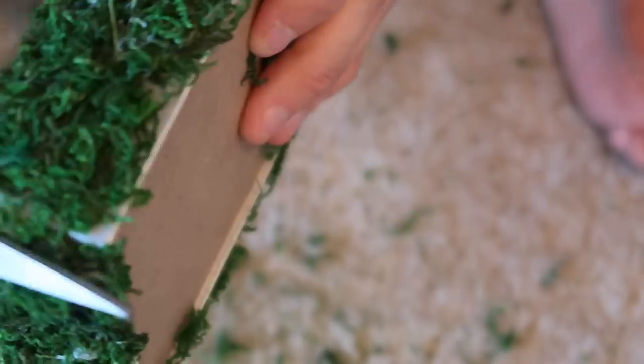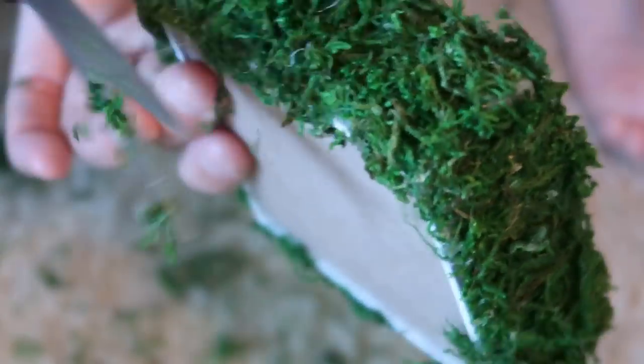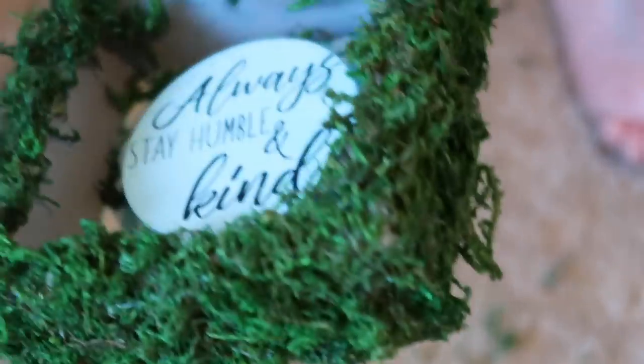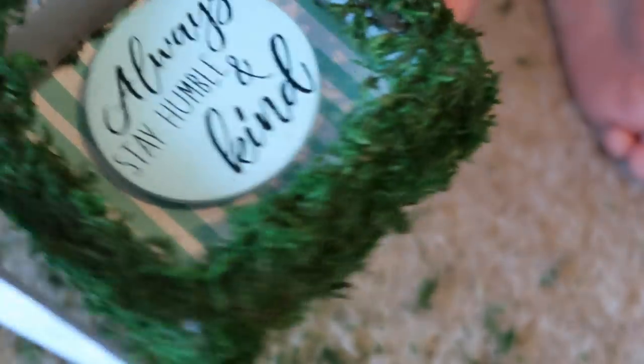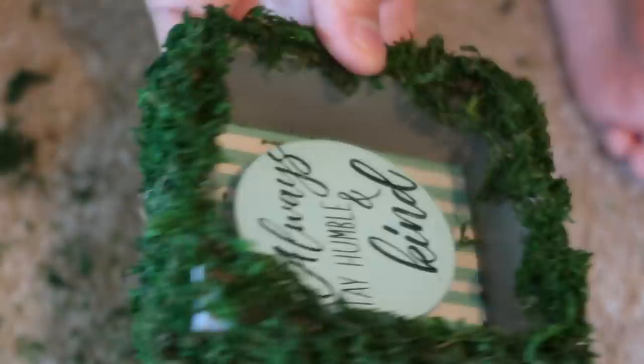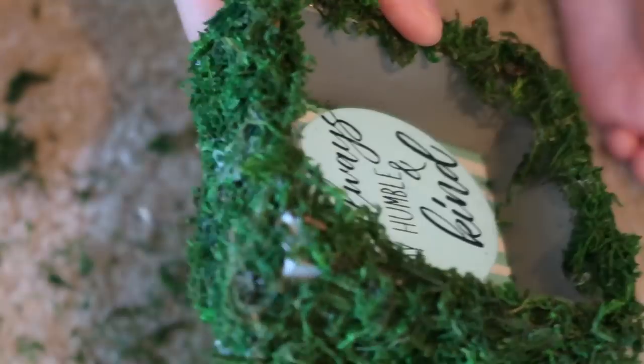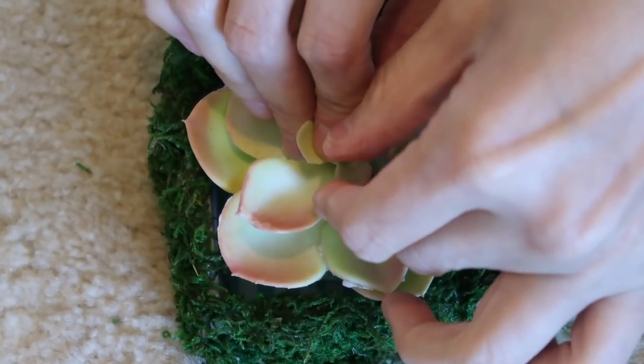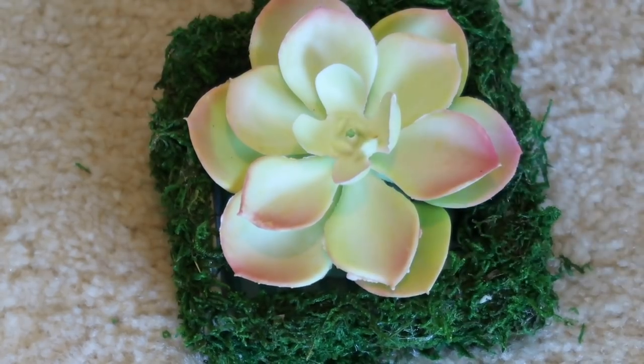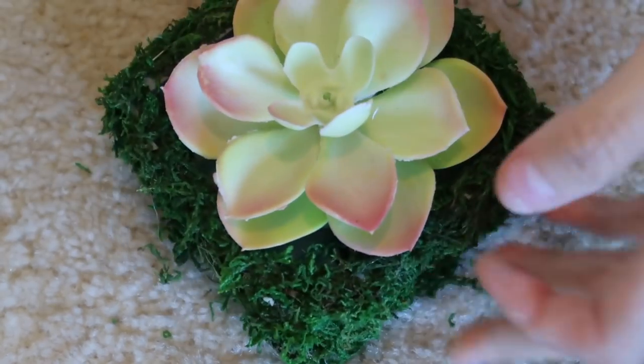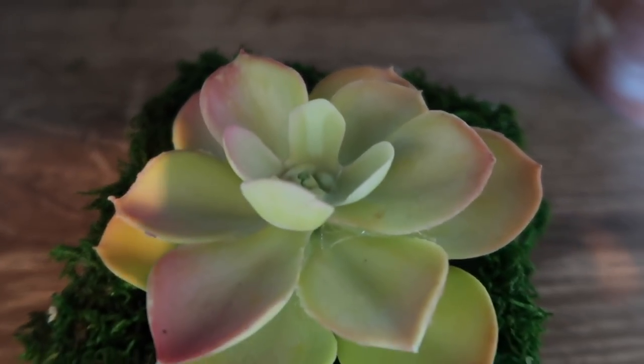And then once everything was covered I just trimmed it down. I should probably trim this beforehand, it would probably be way easier but I didn't. And so now I just always trim as soon as I'm done. And I think this looks nice and it's easy and I love moss. And then I'm just going to take this succulent and hot glue it right in the middle and that's it for this one, super easy.